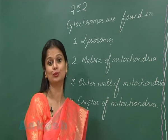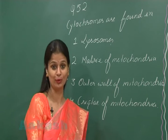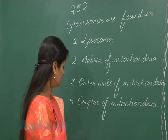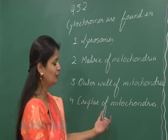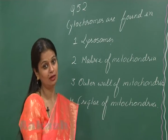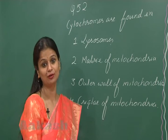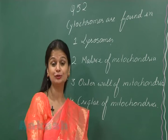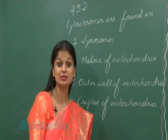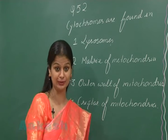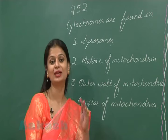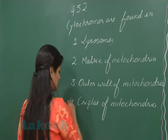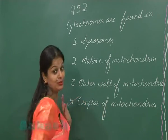The outer wall of mitochondria is porous and has large-size proteins known as porins, making it more permeable. In the cristae of mitochondria, cytochrome oxidase is present, which is part of the electron transport system. So the right option is option number four.